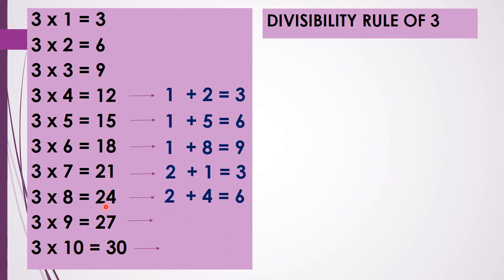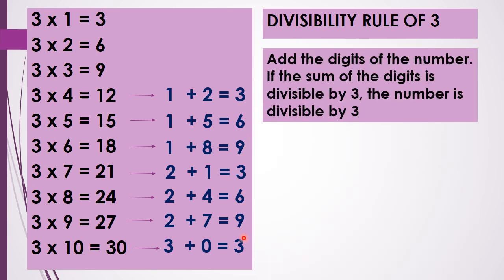When we add the digits we get 6, 9, and so on — 3, 6, 9 which is repeated. So the rule says: add the digits of the number. If the sum of the digits is divisible by 3, the number is divisible by 3.